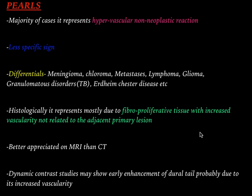We need to rule out tuberculosis, Erdheim-Chester disease, etc. Histologically, it represents mostly fibroproliferative tissue with increased vascularity, which is not necessarily related to the adjacent primary lesion. In many cases it has been proven to not be related to the primary lesion — it is still a controversial area with a lot of ongoing research. The dural tail sign is better appreciated on MRI post-contrast T1-weighted images than CT, and on dynamic contrast studies, the dural tail can show early enhancement, probably due to increased vascularity.